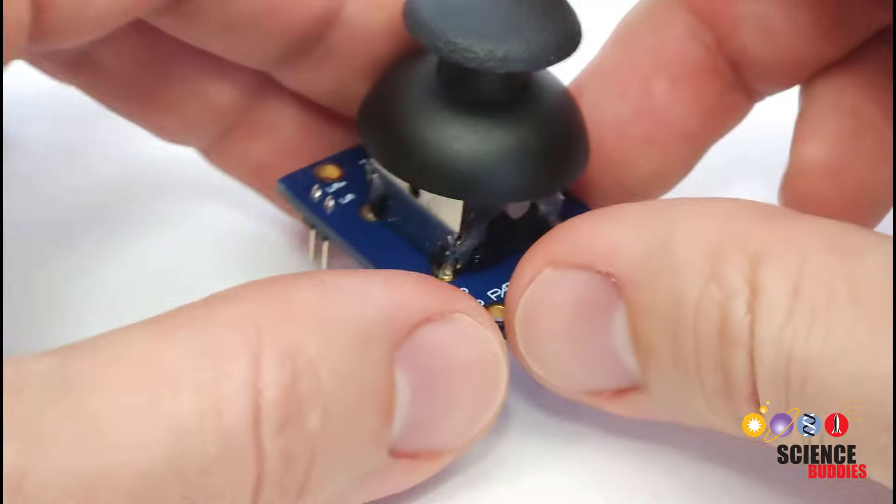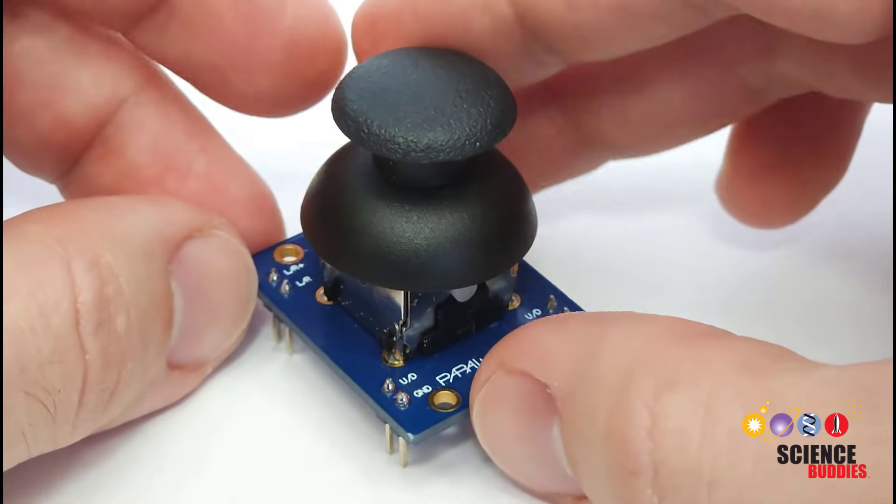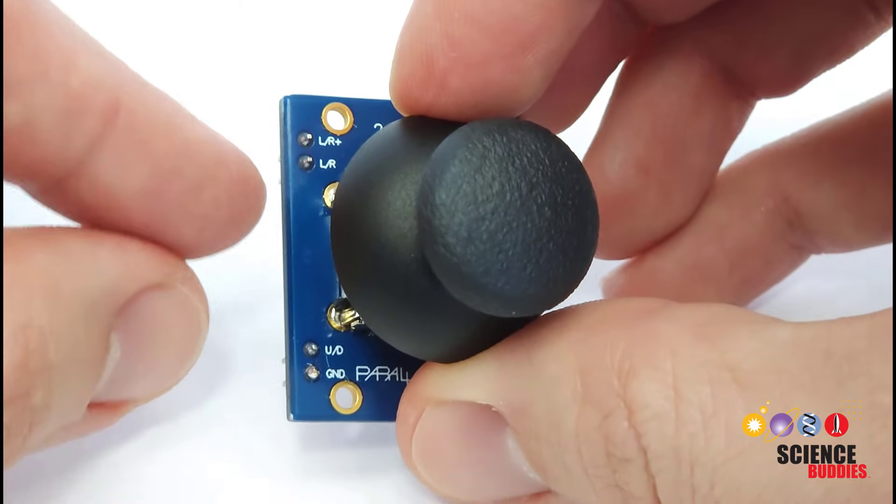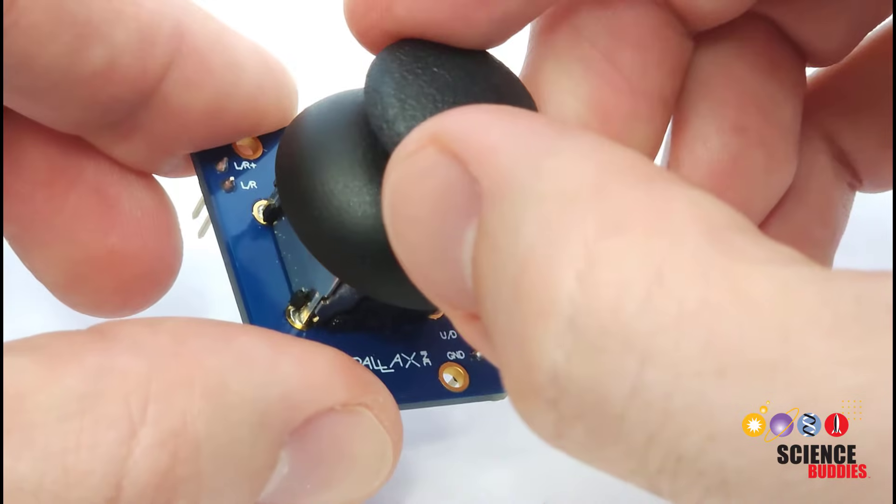So we're going to set this joystick up and it's really just like using two potentiometers except we have them in one physical device. So we're going to connect the up-down signal and the left-right signal to our Arduino and then demonstrate how we can use the joystick to control things.